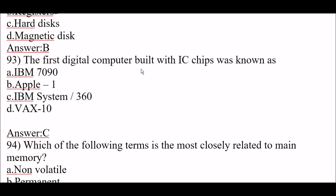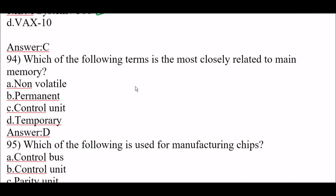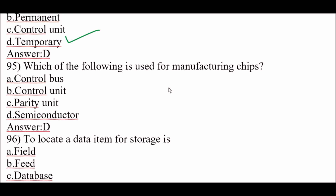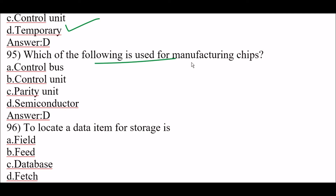Next question: the first digital computer built with IC chips was known as IBM System 360. Next question: which of the following terms is most closely related to main memory? The right answer is option D, temporary. Next question: which term is used for manufacturing chips? The right answer is option D, semiconductor — semiconductor is used for manufacturing chips.